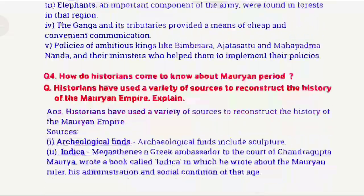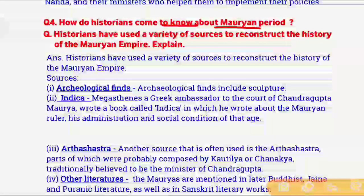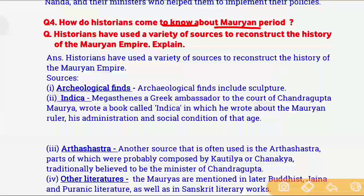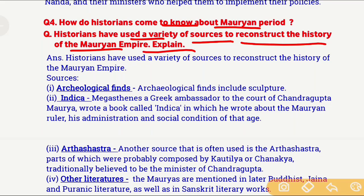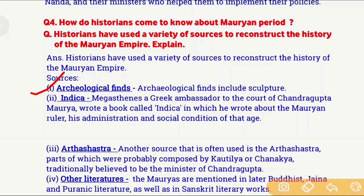Question number 4: How do historians come to know about the Mauryan period? This question can also be asked as: Historians have used a variety of sources to reconstruct the history of the Mauryan Empire — explain. To find out the history of the Mauryan Empire, historians use many sources. Let us look at what those sources are through which we get information about the Mauryan Empire.